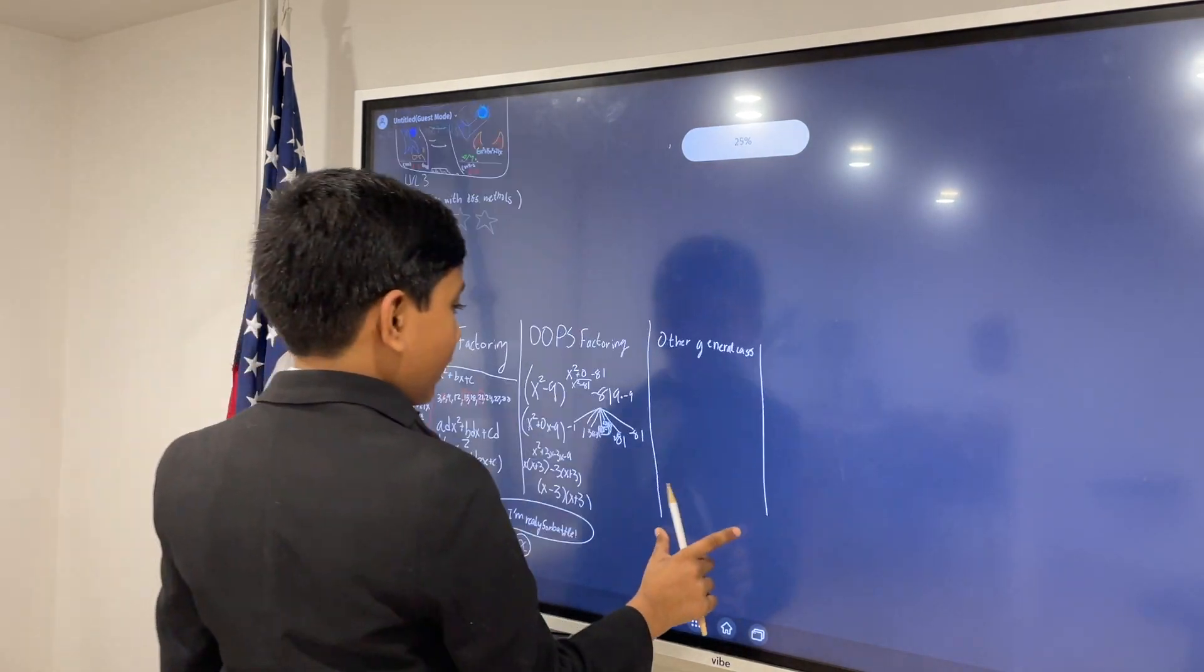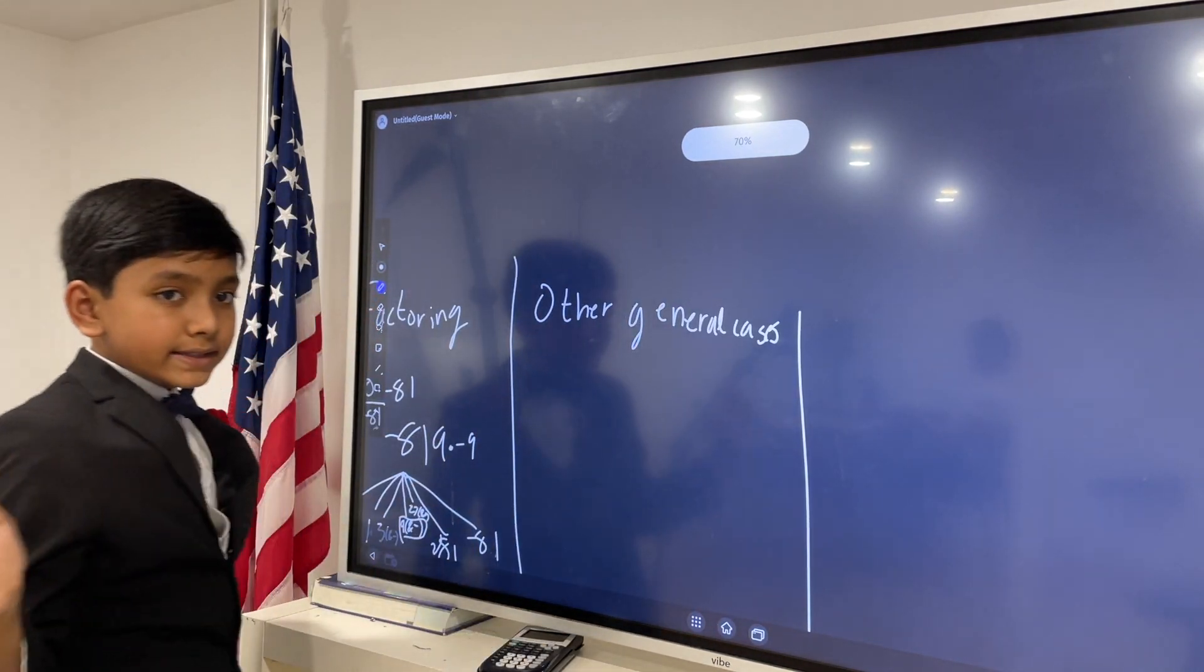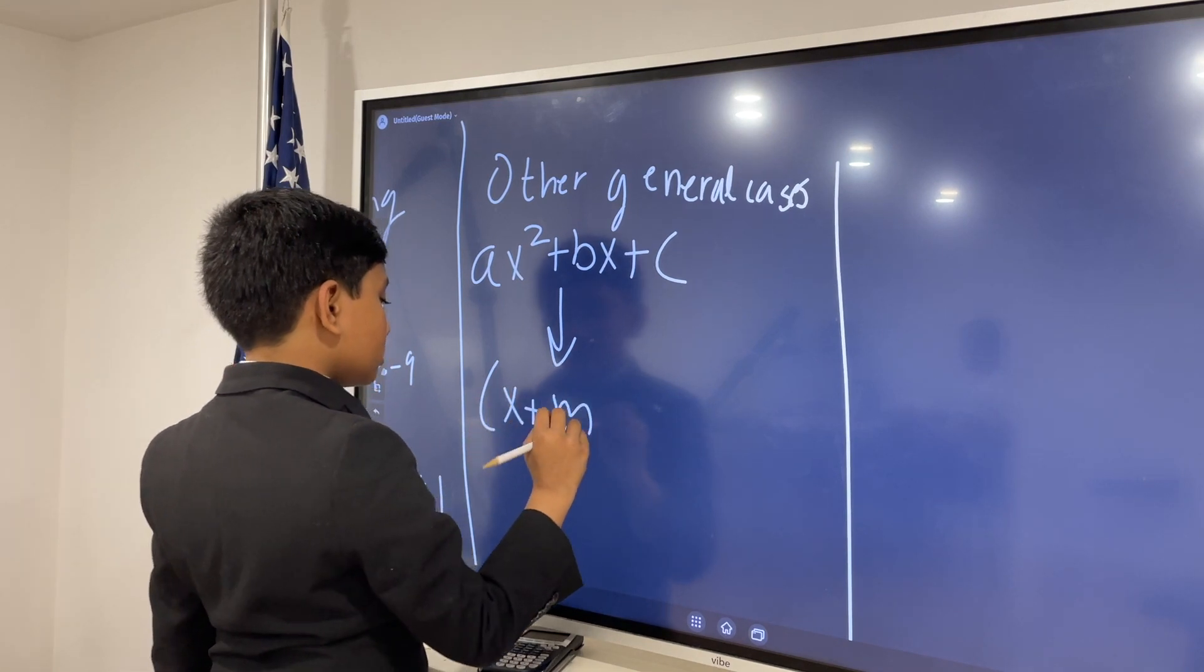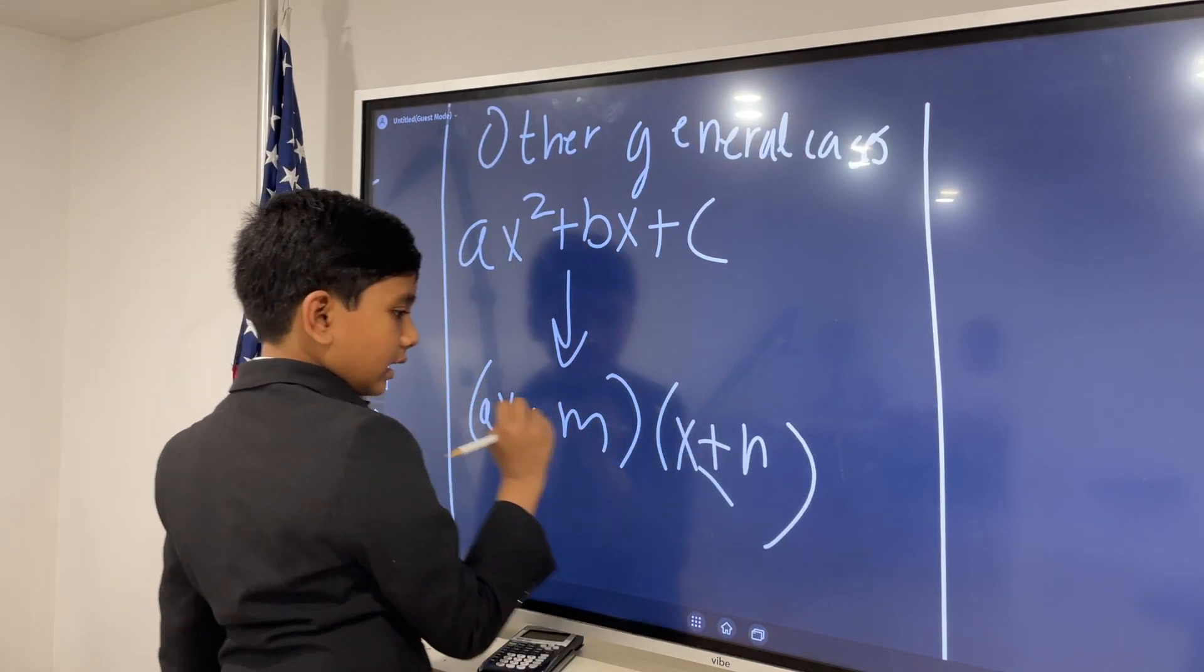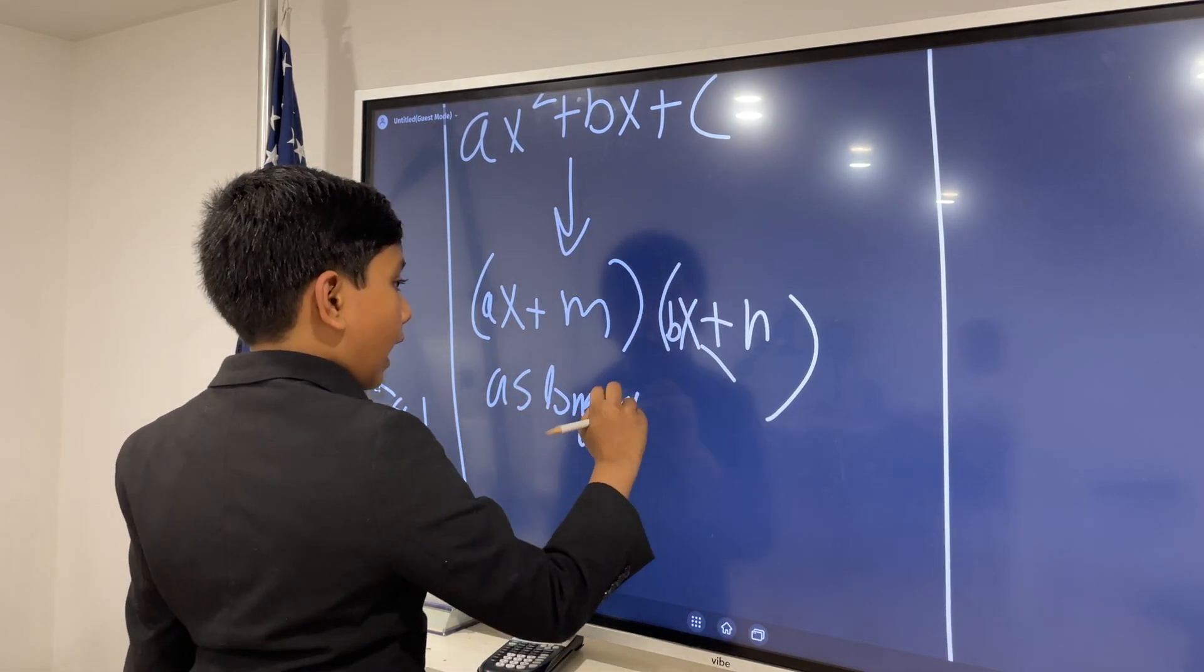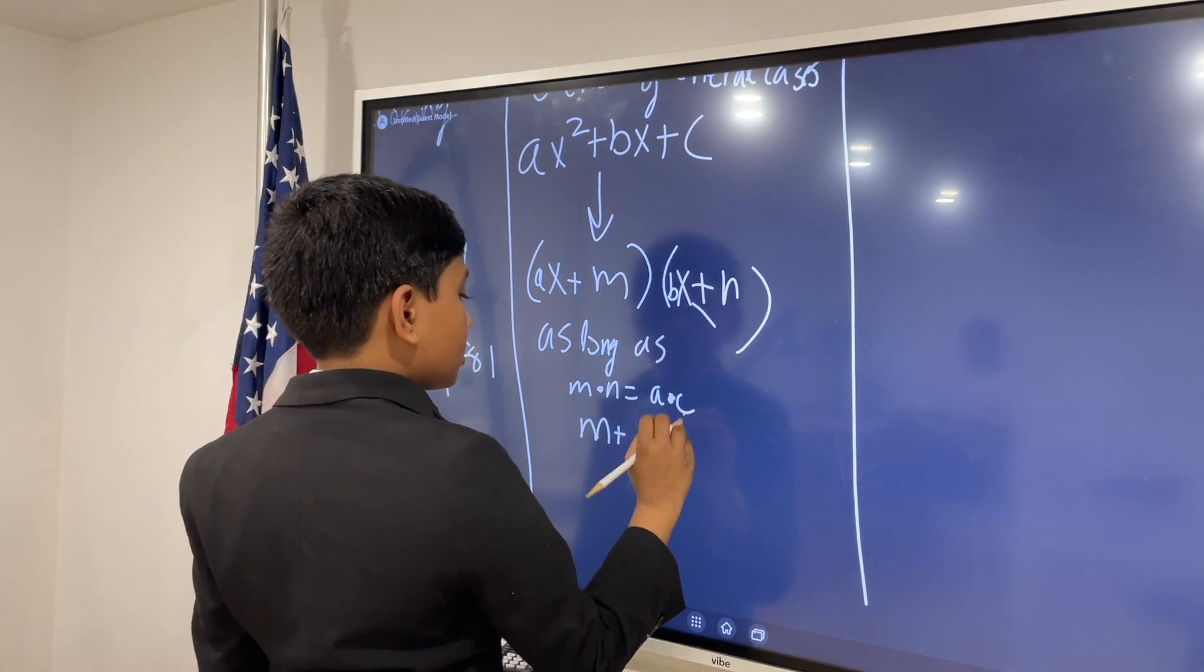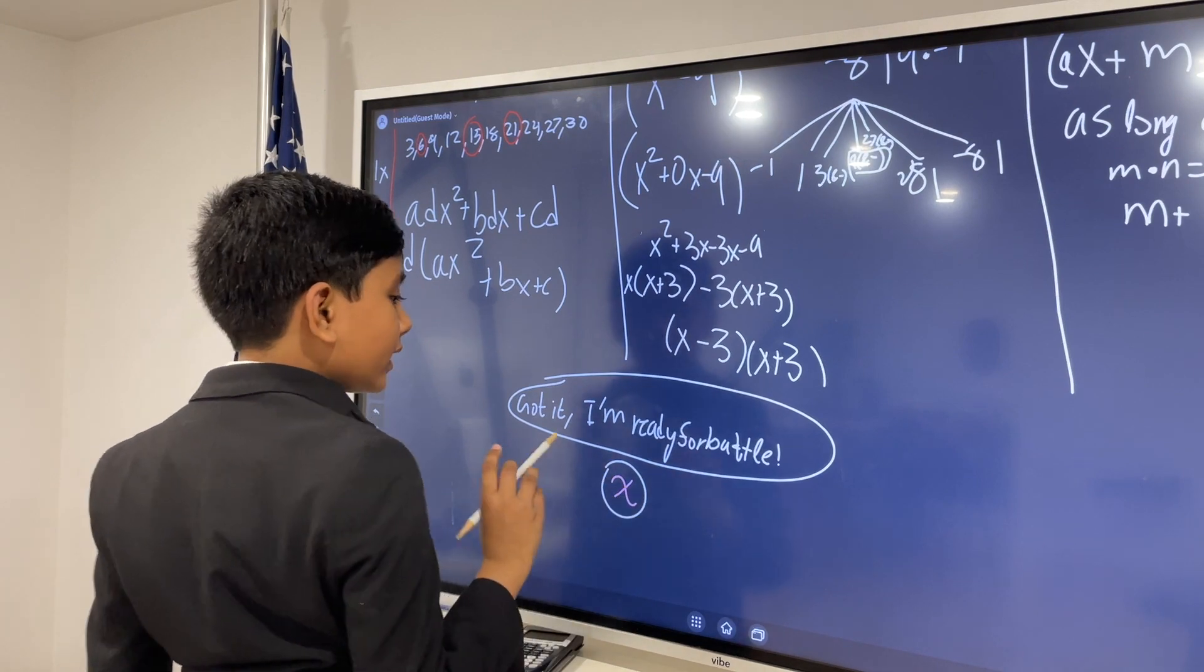And finally, there are some other general cases. I mean, the general case is that if you have ax squared plus bx plus c, then you can factor it into x plus m and x plus n, or rather, you can say a and b, because there's sometimes going to be a coefficient over here. As long as m times n is equal to a times c, and m plus n is equal to b. When a is 1, m times n just has to be equivalent to c. Got it? I'm ready for battle.